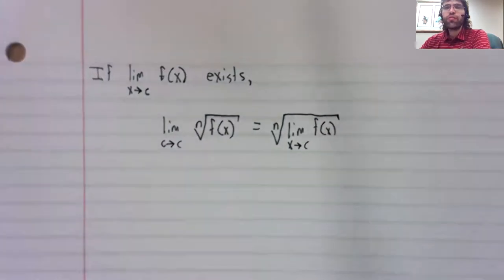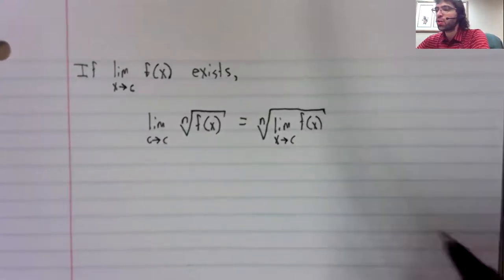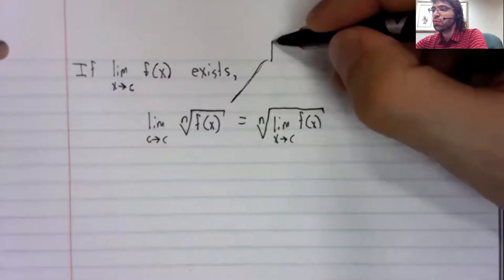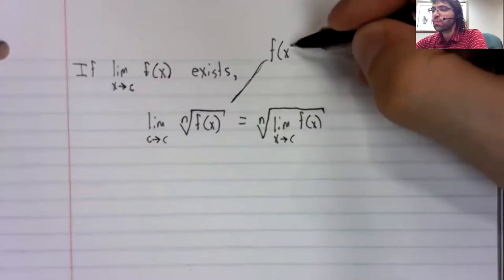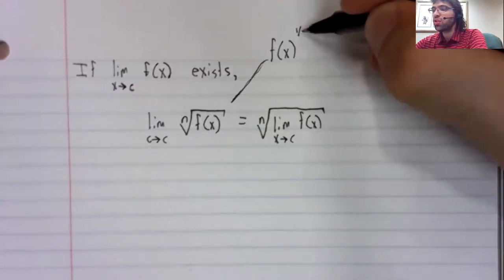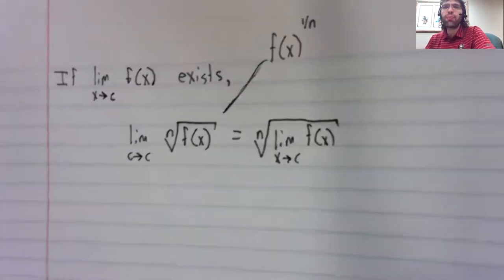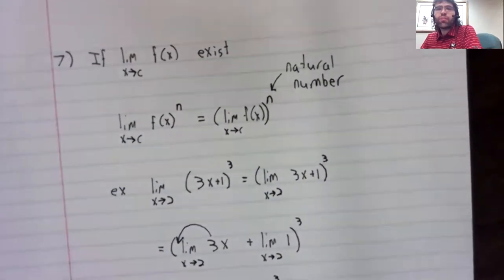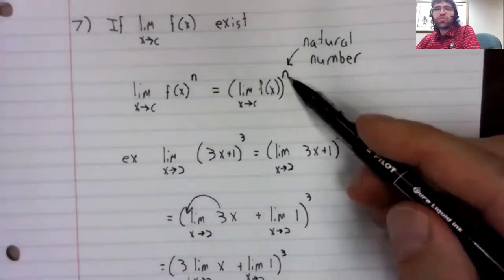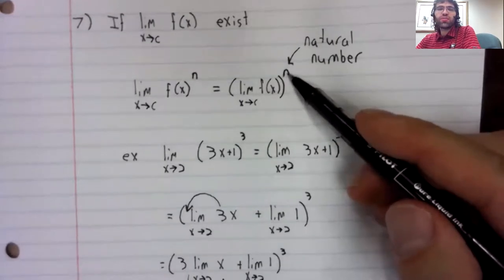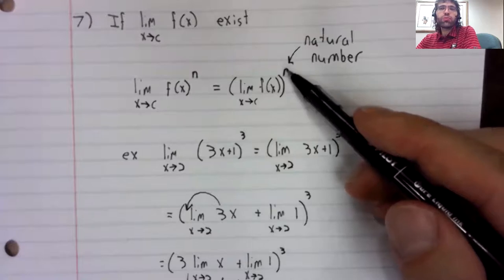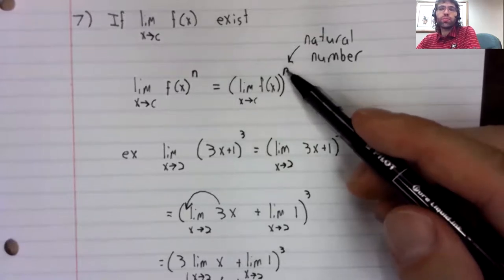In reference to something I said earlier, the nth root is f(x) to the 1 over n power. So if you remember back here, I said that the textbook assumes that this power is a natural number, but you don't need to assume it.